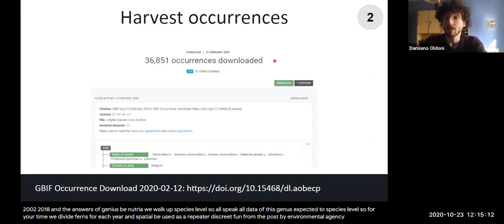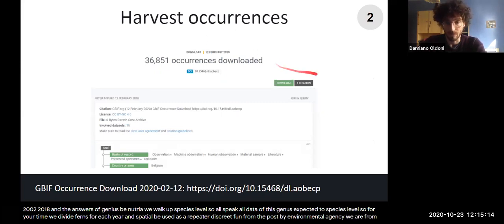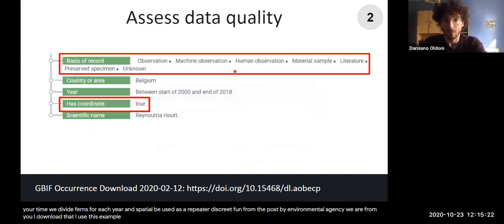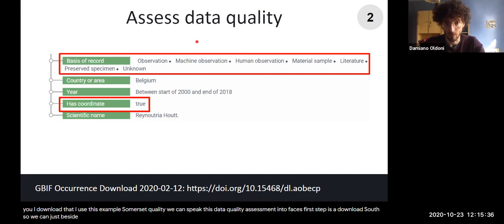We harvest occurrences from GBIF, which is the UI of this download that I use for this example. We do some data quality assessment. We can split this data quality assessment in two phases. First step is at the GBIF download itself, so we can just decide what we want to download from GBIF. For example, only data with coordinates and with some basis of record, so we avoid living specimens for example and fossils.